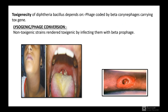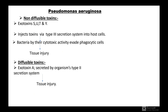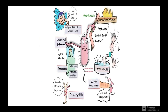The characteristic membrane formation can be seen in diphtheria infection. Pseudomonas aeruginosa produces non-diffusable toxins — exotoxins S, U, and T injected via the type 3 secretion system into host cells — which evade phagocytic cells by cytotoxic activity causing tissue injury. Diffusable toxins include exotoxin A, secreted via the type 2 secretion system, also causing tissue injury.